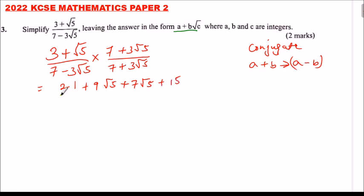You divide by, this 7 times 7 is 49. You note that 7 times 3√5, when you minus 3√5 times 7, you get 0. So you can skip that.